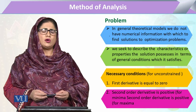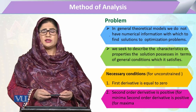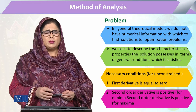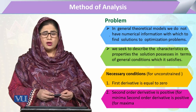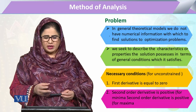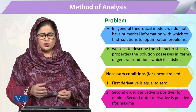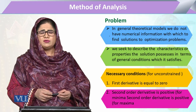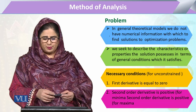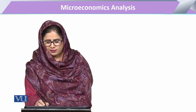Economics के general theoretical models को solve करने के लिए जब data available न हो, incomplete हो, या numerical form में न हो, तो mathematical और statistical tools use करना मुश्किल हो जाता है। ऐसी situation में optimization की conditions apply होती हैं: जब किसी point को maxima या minima tag करना हो तो दो conditions लाज़मी हैं। पहली necessary condition है कि first derivative equal to zero आना चाहिए।